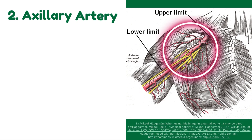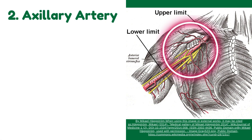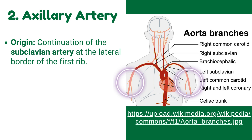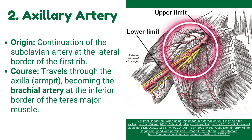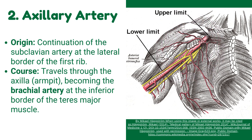Number 2: the axillary artery. It is the continuation of the subclavian artery at the lateral border of the first rib. It travels through the axilla, becoming the brachial artery at the inferior border of the teres major muscle.